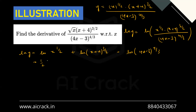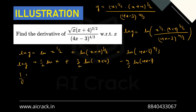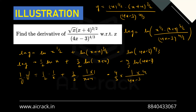We get: ln y = (1/2)ln(x) + (3/2)ln(x+4) − (4/3)ln(4x−3). Now taking the derivative on both sides, we get (1/y)·y' = (1/2)·(1/x) + (3/2)·(1/(x+4))·1 − (4/3)·(1/(4x−3))·4, applying the chain rule.